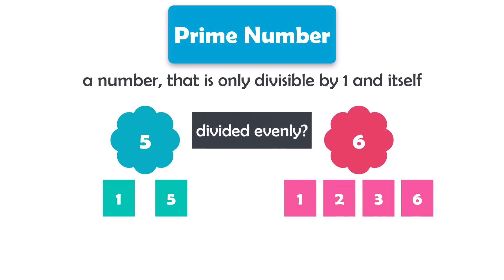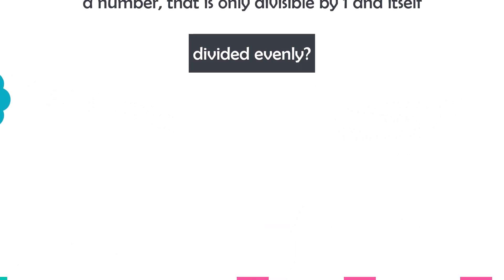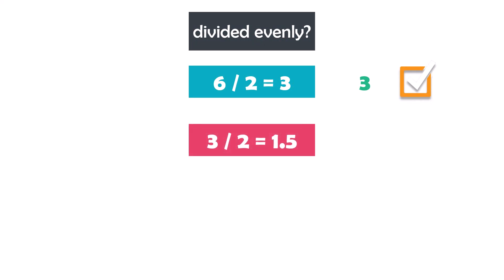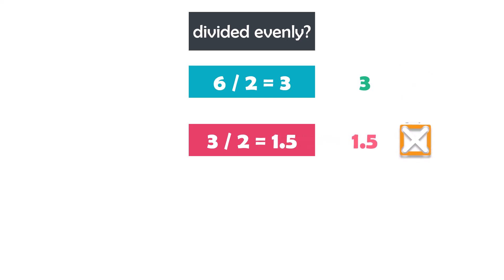What do I mean by divided evenly? This means if we divide the number by another number, we get a whole number without a remainder — we don't get a number with a decimal. For example, 6 divided by 2 is 3, which is a whole number. But 3 divided by 2 is 1.5, which has a decimal, meaning we cannot divide the number evenly.